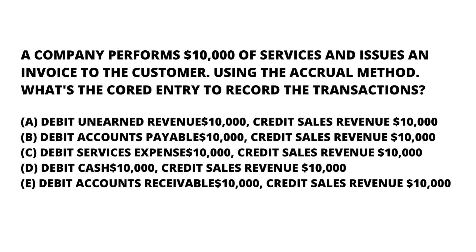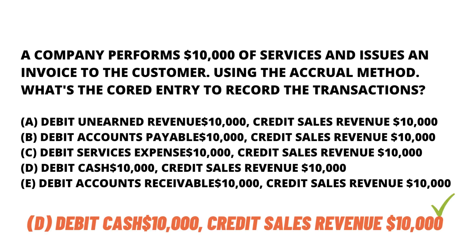The correct answer for the question is option D: debit cash with ten thousand dollars and credit sales revenue with ten thousand dollars. Let me explain why. When a company receives a payment for services that have not yet been performed, the transaction should be recorded as an increase in cash.